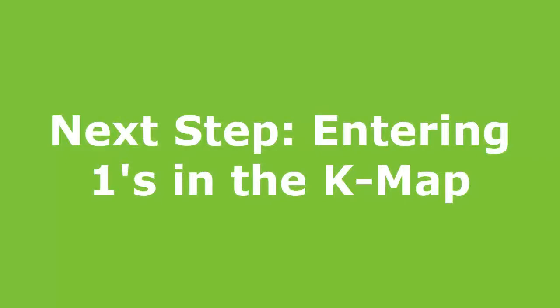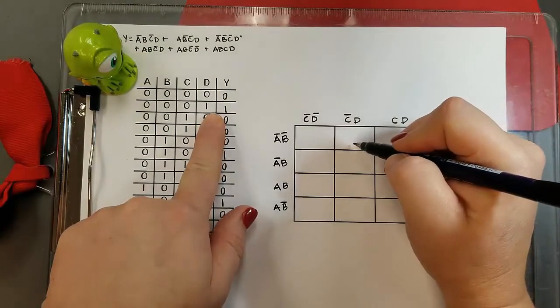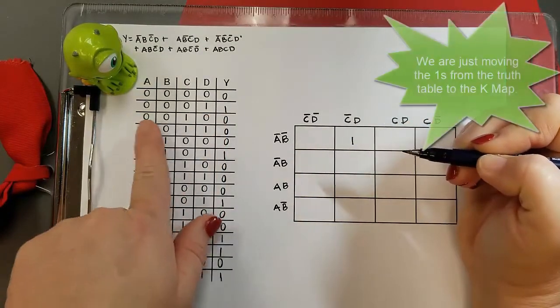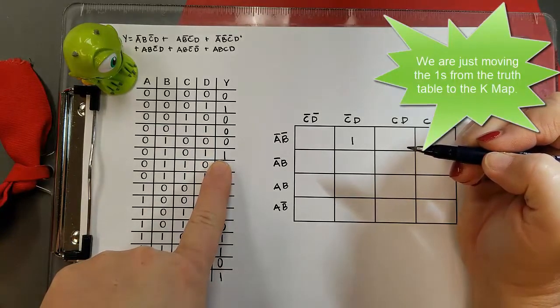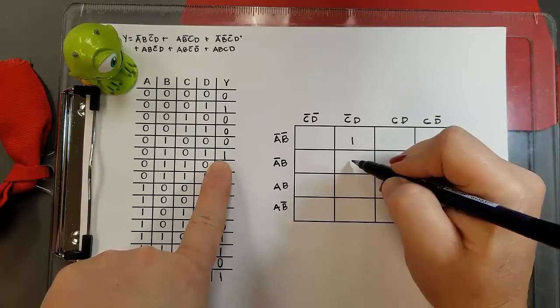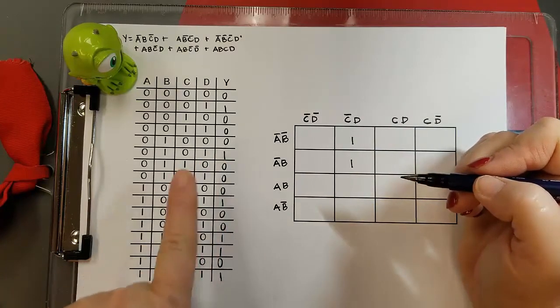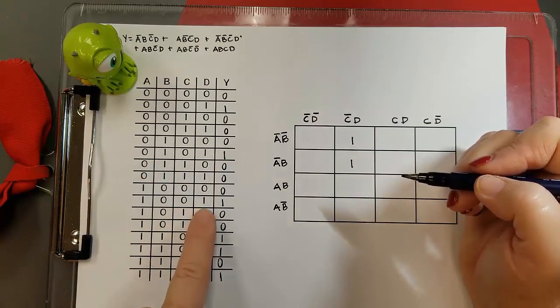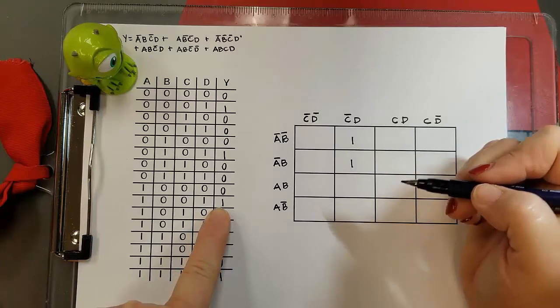Now we need to enter the ones into the k-map, so to do this we're going to go from our truth table to our k-map. I read across and find the right line and then I enter the cell. So now for this second one, that would be not A B not C D that I want to enter a one in. And now that I've entered that one I'm going to move on to the next area where I'd like to enter a one.